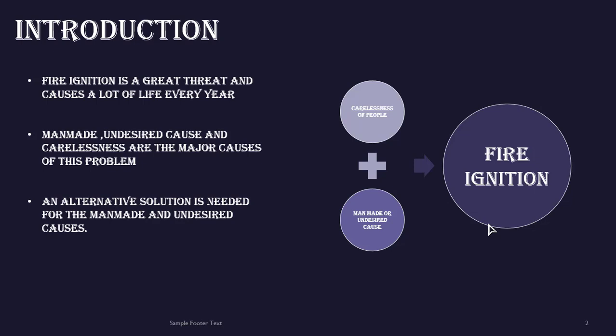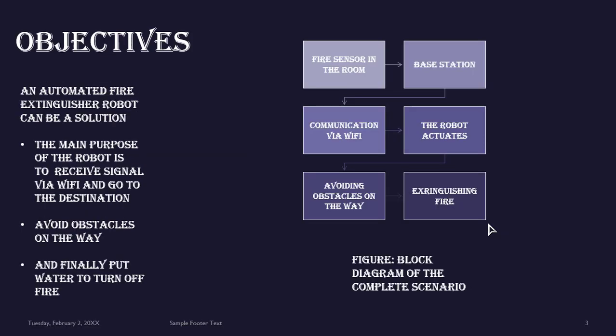Here we have come up with a budget-friendly idea that can be implemented to the industrial area as well as household areas to minimize the damage. The sole purpose of our project is to develop an automated fire extinguisher robot. We have used an obstacle avoiding robot triggered by a Wi-Fi module that can go to the desired location and extinguish the fire.